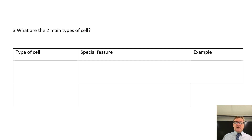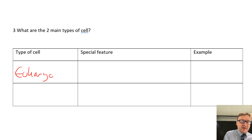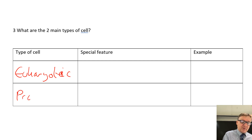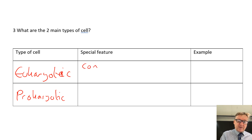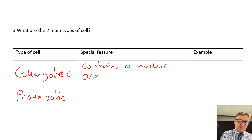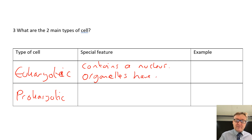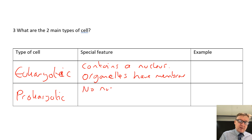Question number three: what are the two main types of cell? We've got eukaryotic, and then the other one is prokaryotic. The special feature of a eukaryotic cell is that it contains a nucleus and organelles - because all the little things in there, like your mitochondria, have membranes.